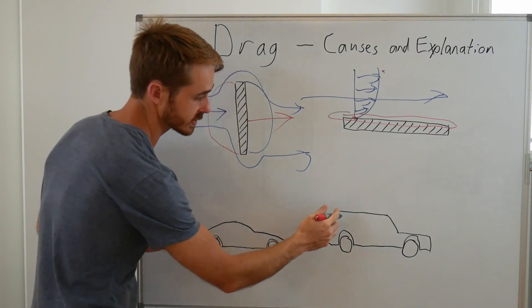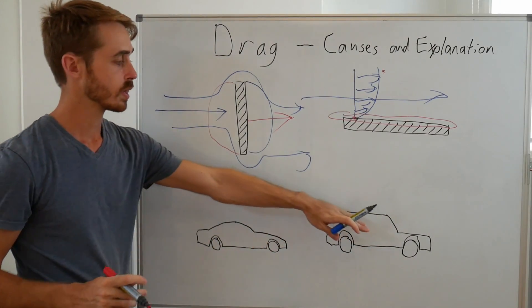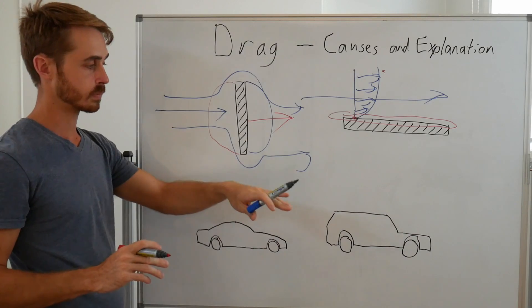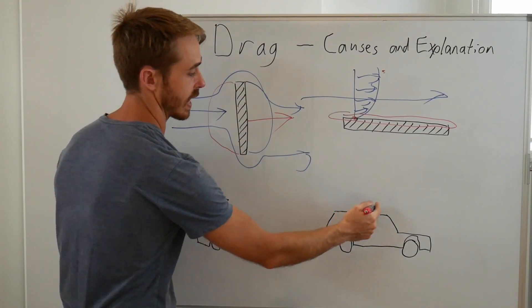Now when we look at some basic car models, we can see here something like an SUV that along these top surfaces, because they are not perpendicular to the flow, because they're parallel to the flow, only viscous drag can act on them.